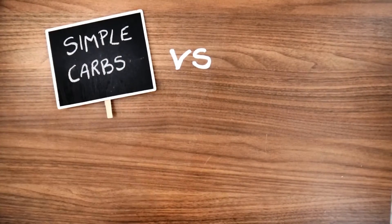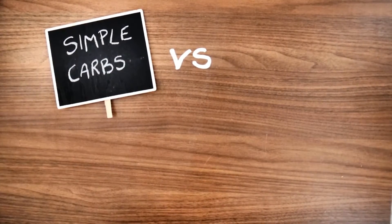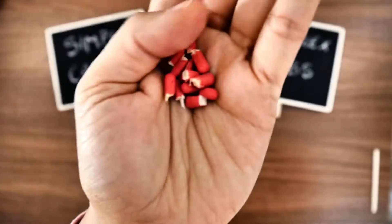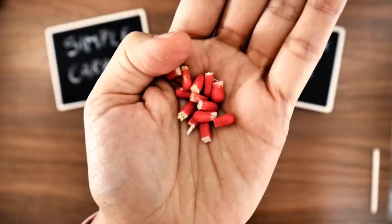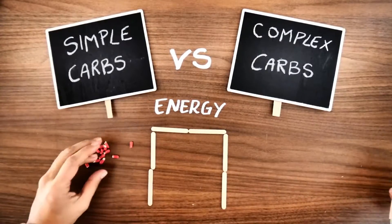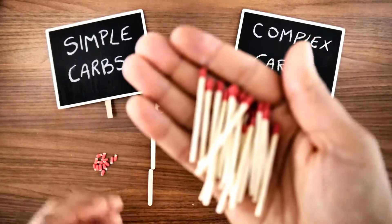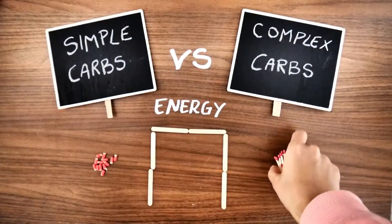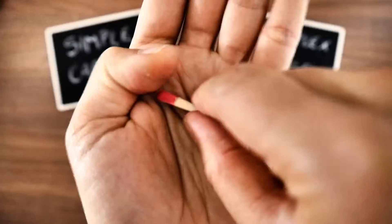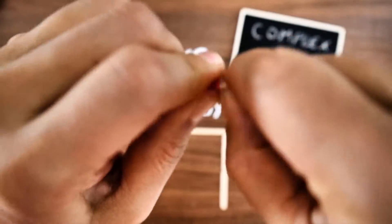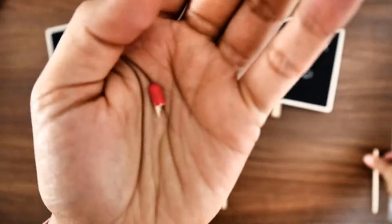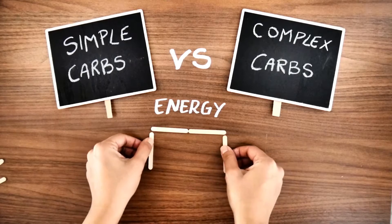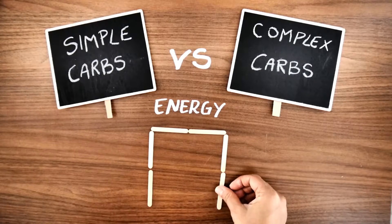Welcome to Food on Mars. What's the difference between simple and complex carbs? Simple carbs are small molecules of sugar, while complex carbs are long chains of carbs that are more difficult for the body to process because it needs more time to extract the sugar. They both provide you with energy, but in a different way.